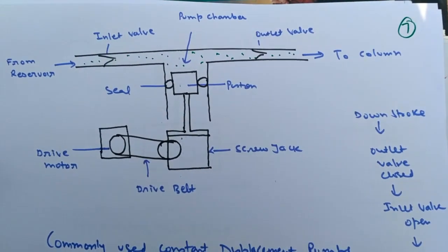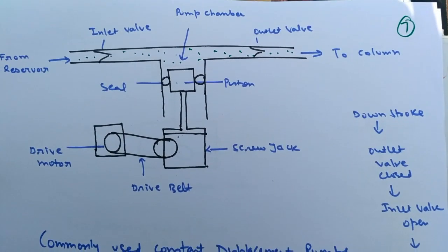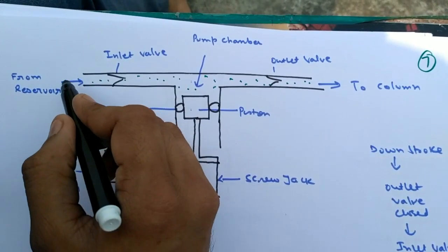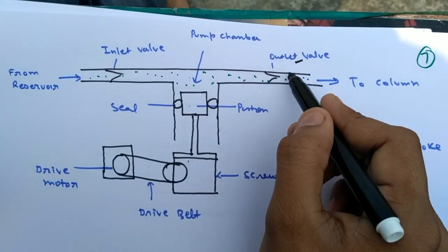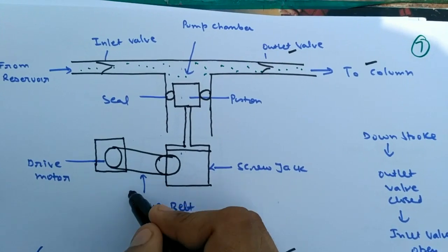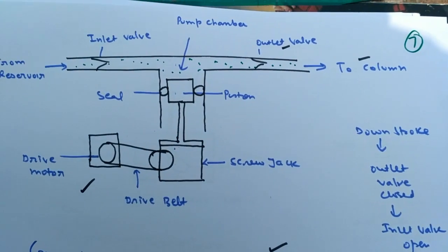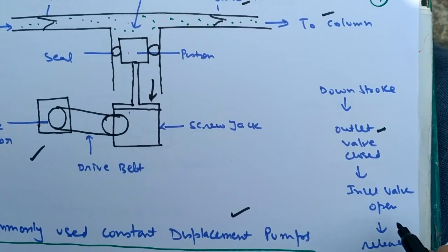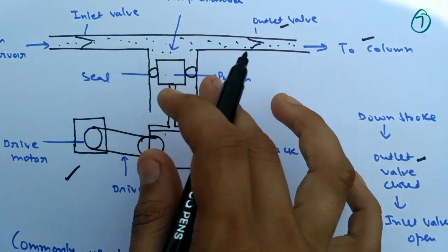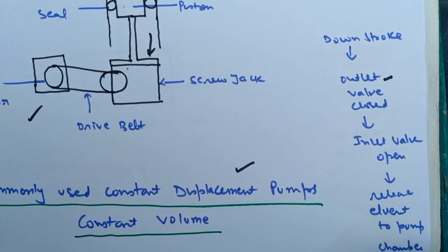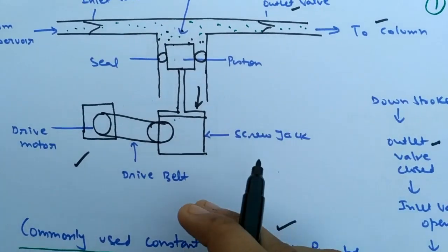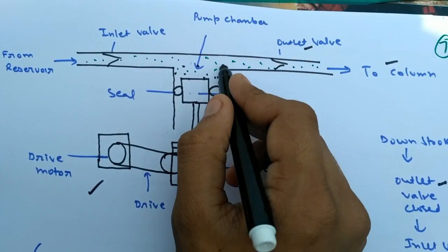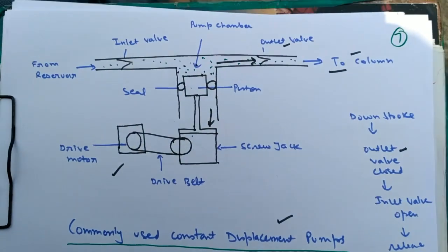The pumping system pumps the solvent into the column. In the constant displacement pump, there is an inlet connected to the solvent reservoir and an outlet sending solvent to the column. A piston system is driven by a motor with a pulley and belt. On the downstroke, the outlet valve closes and the inlet valve opens, allowing entry of solvent to fill the pump chamber. On the upstroke, the reverse occurs — inlet closes, outlet opens — and the collected solvent is sent to the column.